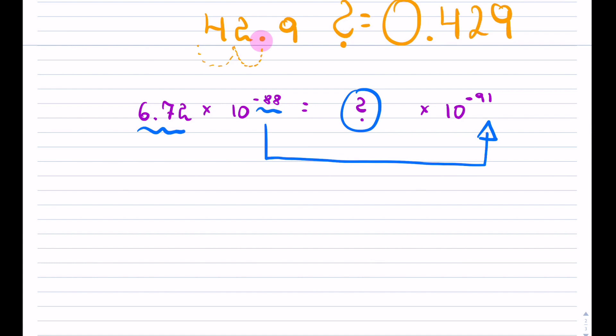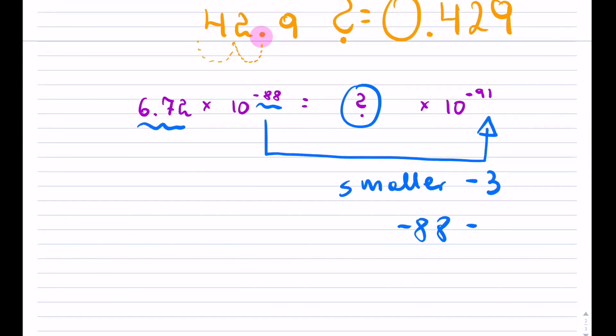So now, negative 88. If I want to get to negative 91, this will have to get smaller by 2. So notice we would have to do this and it's actually by 3 because it's 91.